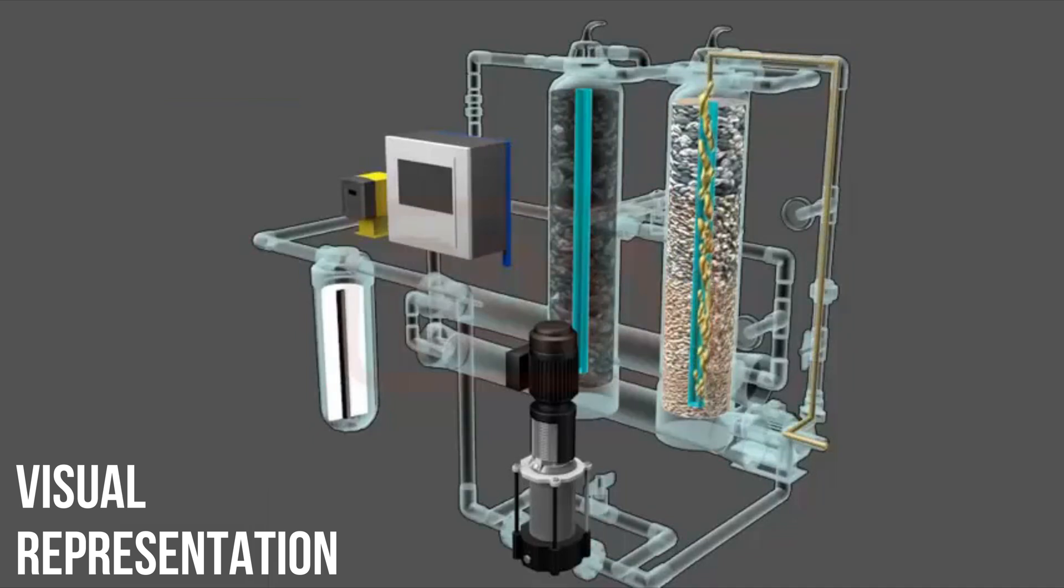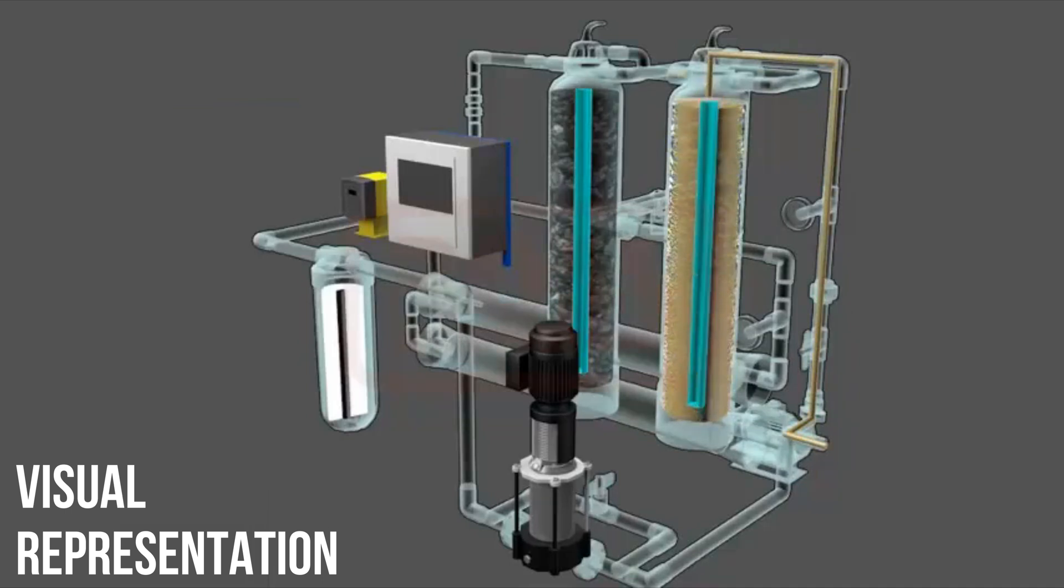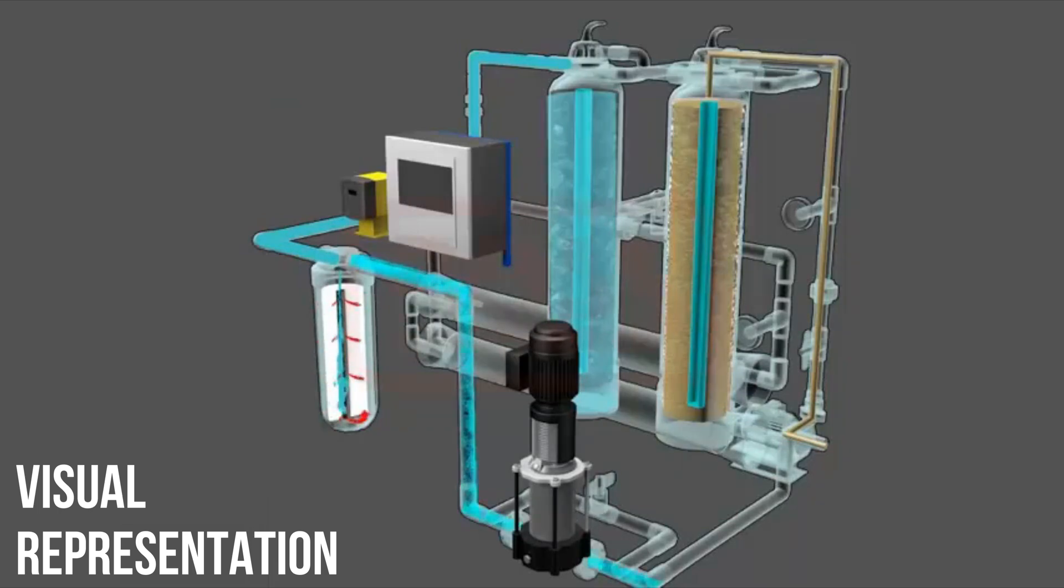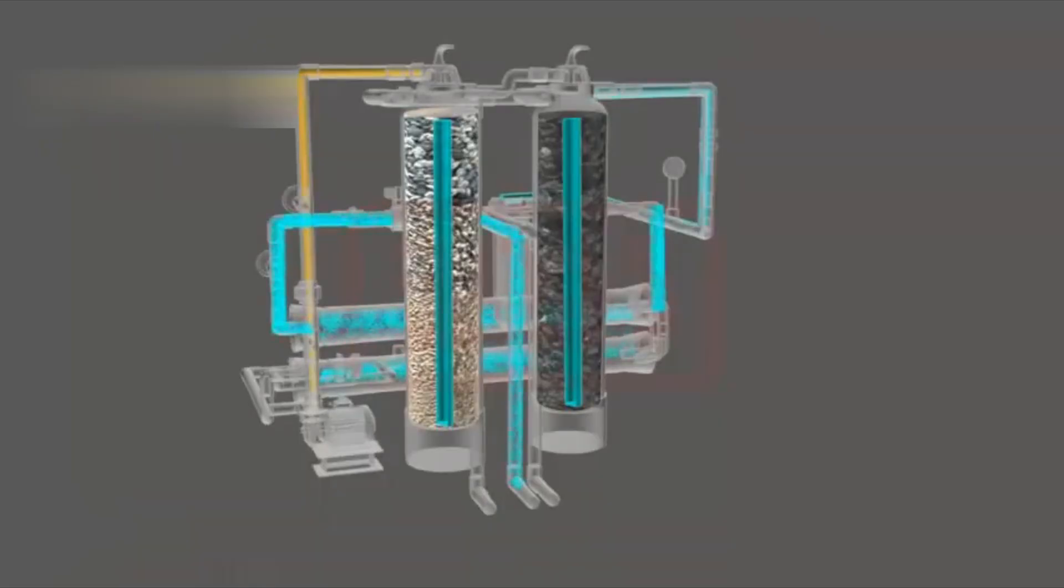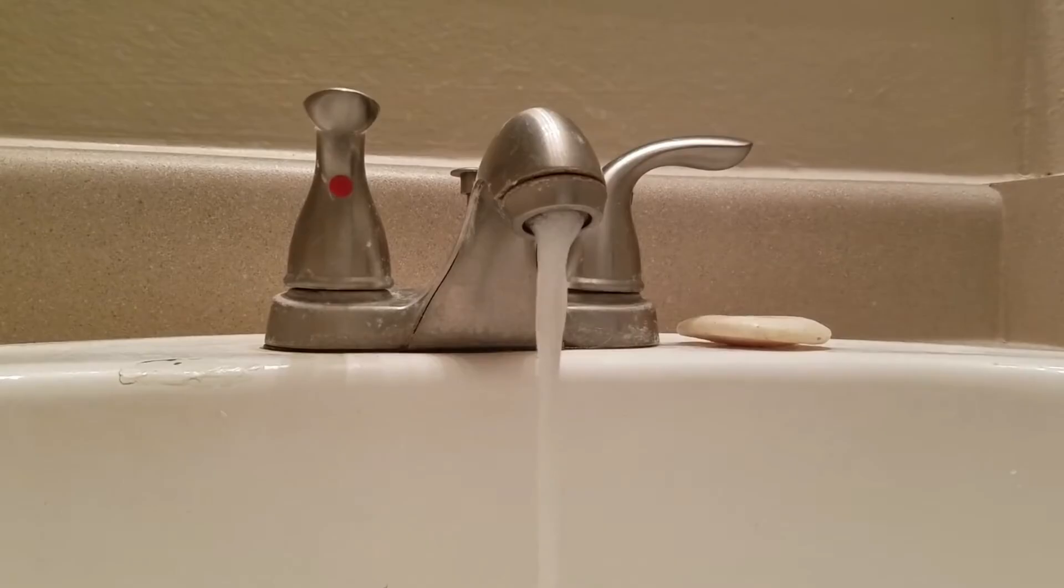These membranes have incredibly tiny holes, even smaller than a human hair, that allow only the water molecules to pass through while blocking out salt, bacteria, and other impurities. What you get on the other side is clean, fresh water, ready to be used for drinking, showering, and even cooking.